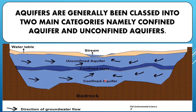Bedrock is the solid rock layer beneath the aquifers that acts as a boundary for groundwater flow. The arrows in the diagram indicate the direction of groundwater flow within the aquifers. In the unconfined aquifer, the arrows show water flowing horizontally. In the confined aquifer, the flow can be more complex due to pressure differences.